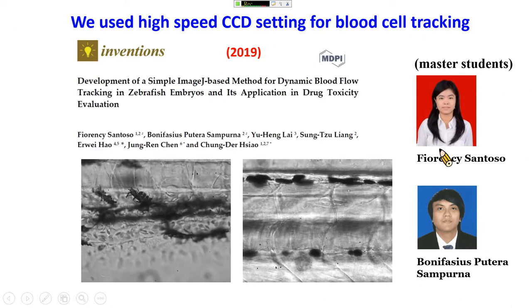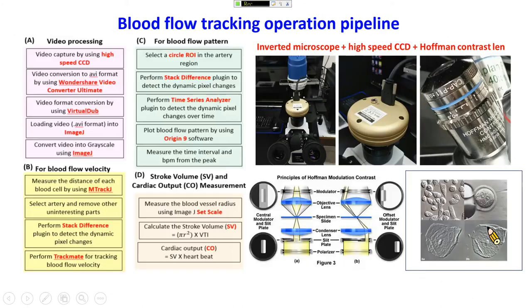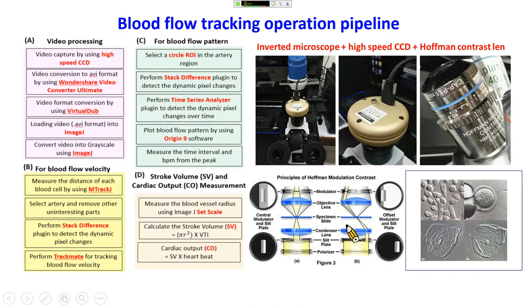This work was done by my students Phil and Bonnie. The setup uses an inverted microscope with a high-speed CCD, and a Hoffman modulation contrast lens to enhance image contrast. The Hoffman modulation lens blocks the light path on one side while opening the other, making the image appear more three-dimensional and enhancing contrast without needing to stain the zebrafish embryo.